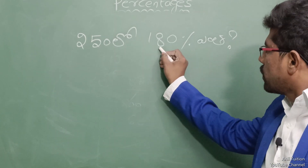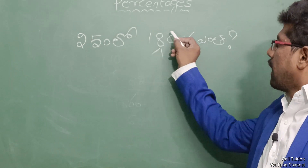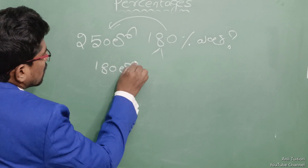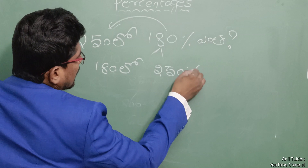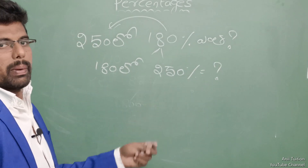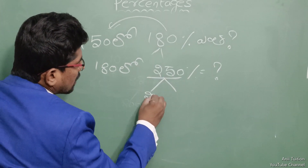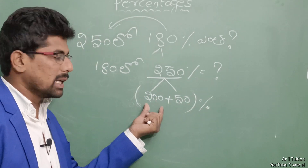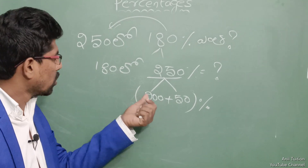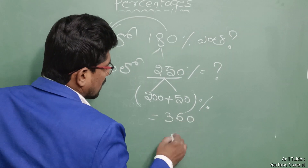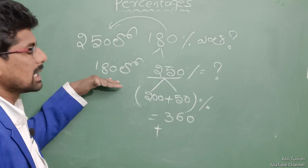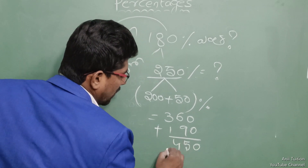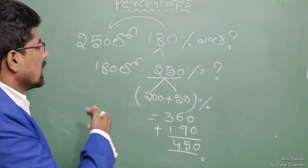Let's understand the second problem. The problem is: 250% of 180 is equal to how much? So separate it: 200 plus 50 percent. 200% means 100% is 180, so 200% means two times of 180, equal to 360. Plus 50%: 100% means 180, so 50% means half of this value, which is 90. So 360 plus 90 equals 450. 450 is the final answer.